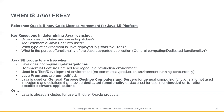So after reviewing those questions — when is Java free? You'll get a copy of these slides, so you can take this back to your team and review it. Java SE products are free when Java does not require updates and patches, commercial features are not leveraged in production environments, used in test development, and Java programs are unmodified across the board. Java is used for general purpose computers for general computing functions — not for dedicated functionality or embedded, function-specific software applications.